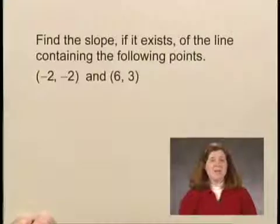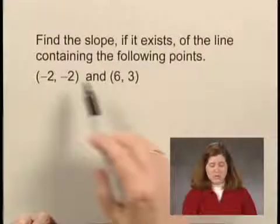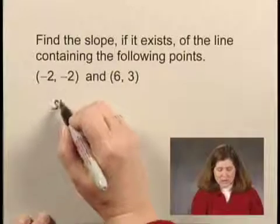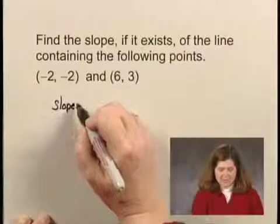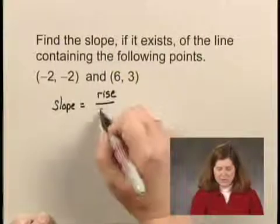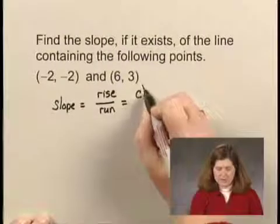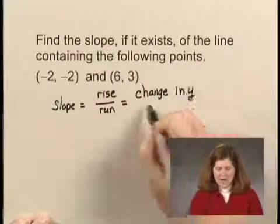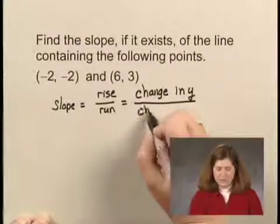Now, the slope will exist unless these are two points on a vertical line. The slope of a line is defined as the rise over the run or the change in y over the change in x.